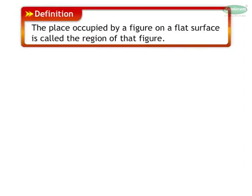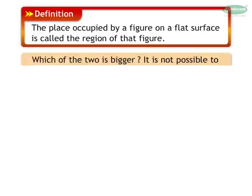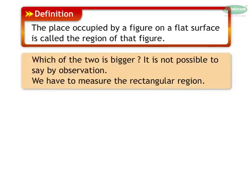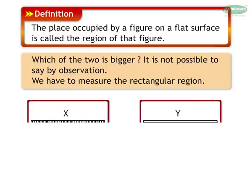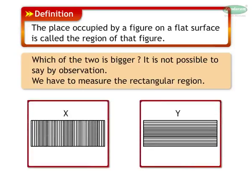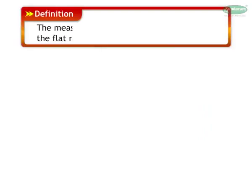The place occupied by a figure on a flat surface is called the region of that figure. It is not easy to say which region is bigger in case of similar geometric figures by merely observing. We must measure each to decide the greater of the two. The measure of a region is called the area of the flat region.